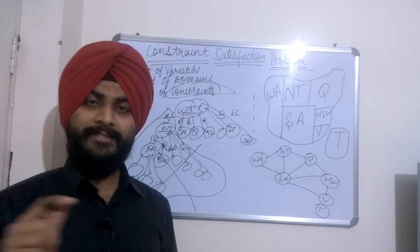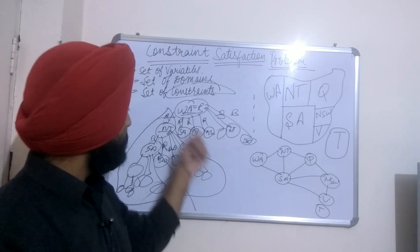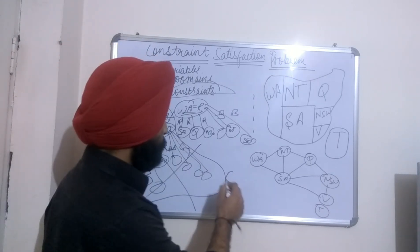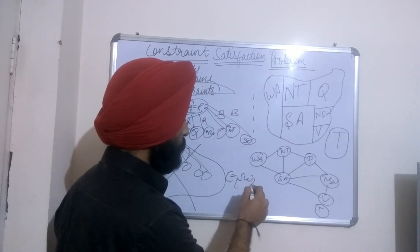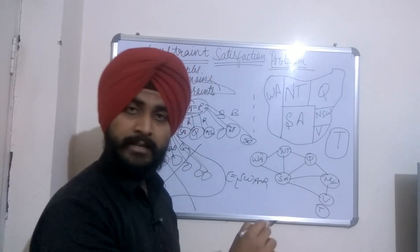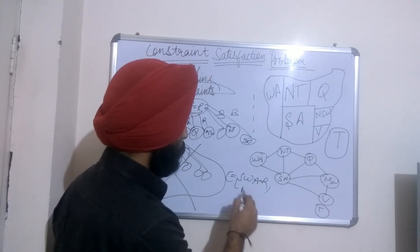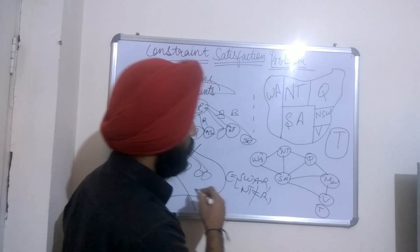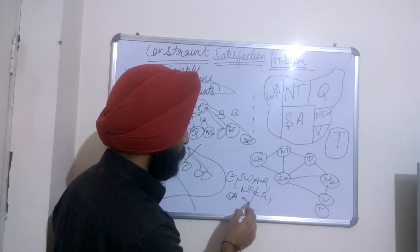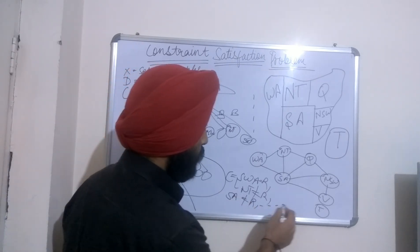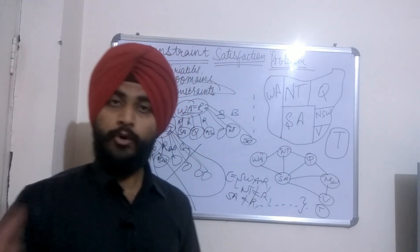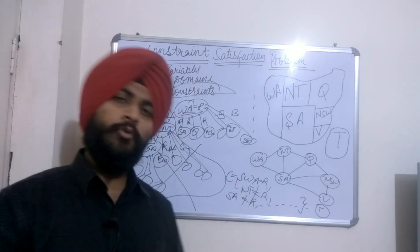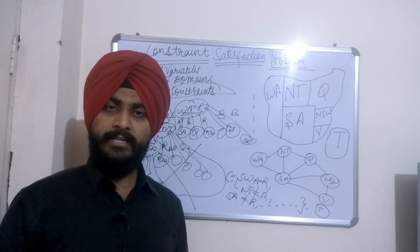Constraints ki waja se aapka state space tree chota ho gaya. Ab yeh constraint kya hai? For example: Northern Territory cannot be equal to red, Southern Australia cannot be equal to red, and so on — aise karke aapke constraints likhe jaayenge. Yeh ek constraint maine aapko likhke bataya hai. Aap koi bhi constraints daal sakte ho.